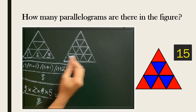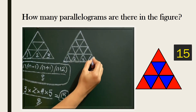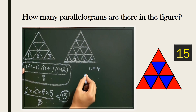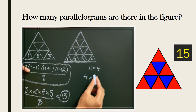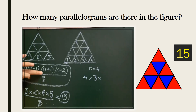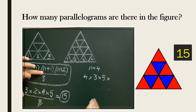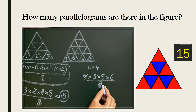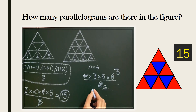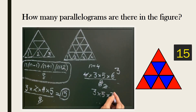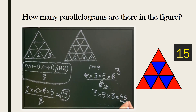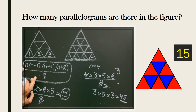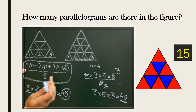For the next figure, n is 1, 2, 3, 4 — so n is 4. Substituting into the formula: 4 into (n−1=3) into (n+1=5) into (n+2=6) divided by 8. The 6 and 8 simplify, leaving 3 into 5 which is 45. So there are 45 parallelograms in this triangle. To count parallelograms in a triangle, use the formula: n(n−1)(n+1)(n+2) divided by 8.